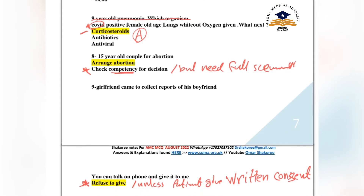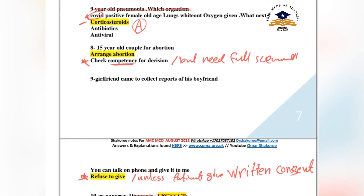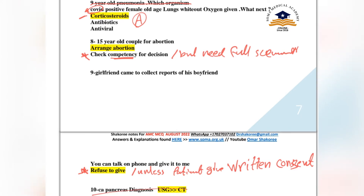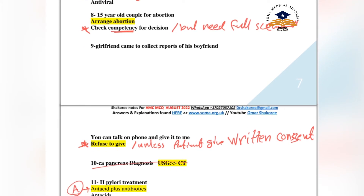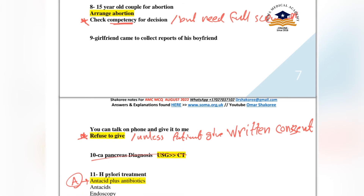A 15-year-old came for an abortion. Before deciding, you have to check competency for the decision. Also, a girlfriend came to collect the reports of her boyfriend — what do you do?